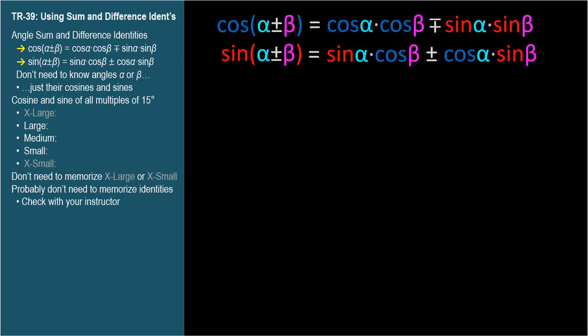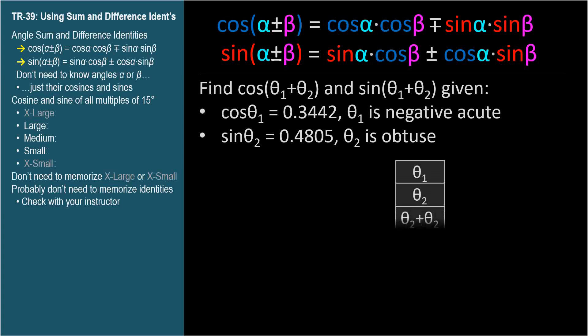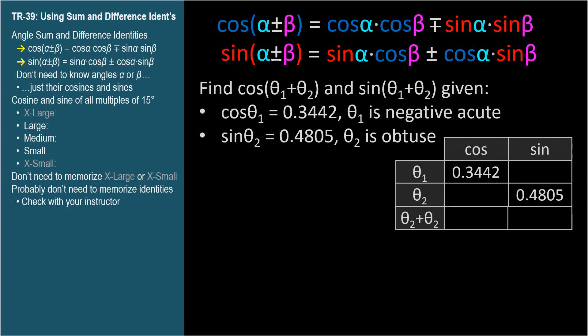Let's work out one more problem that combines topics from previous videos. What's the cosine and sine of an angle that's the sum of θ₁ + θ₂, given that θ₁ is a negative acute angle whose cosine is 0.3442, and θ₂ is an obtuse angle whose sine is 0.4805. To use the sum and difference identities, we don't really need to know the measure of the constituent angles, just their cosines and sines. So let's create a chart, filling in what we know and figuring out what we don't.